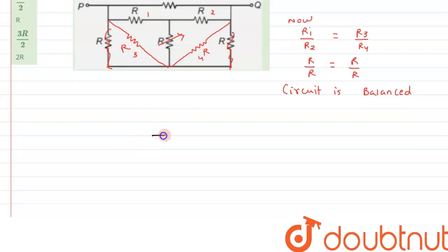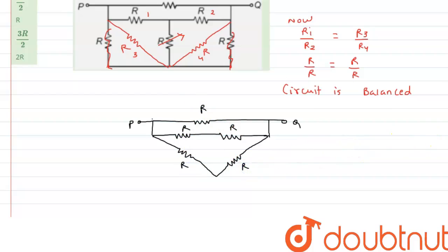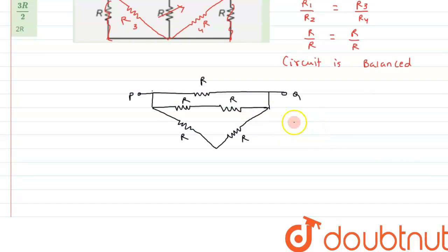After neglecting the middle resistance, this resistance will be R and it comes in series with this R. Similarly, this resistance R comes in series with this R on the other branch. These two branches are connected between point Q above and point P at the bottom.